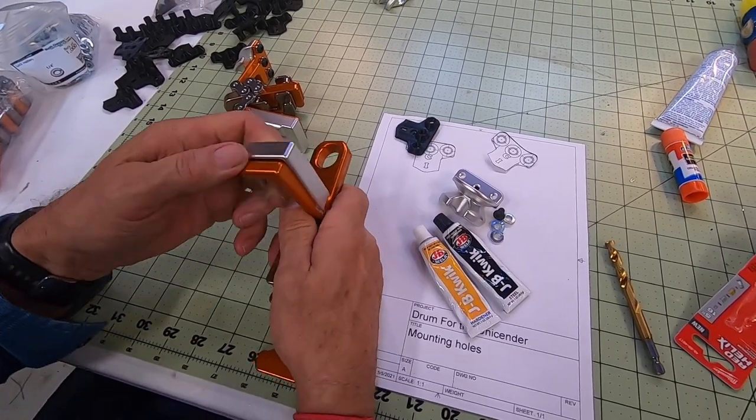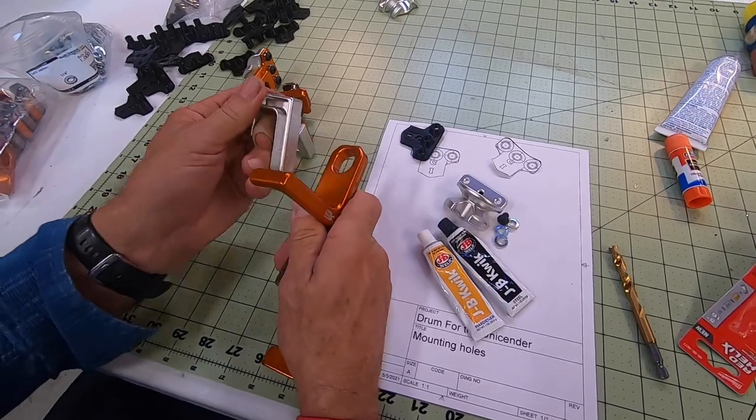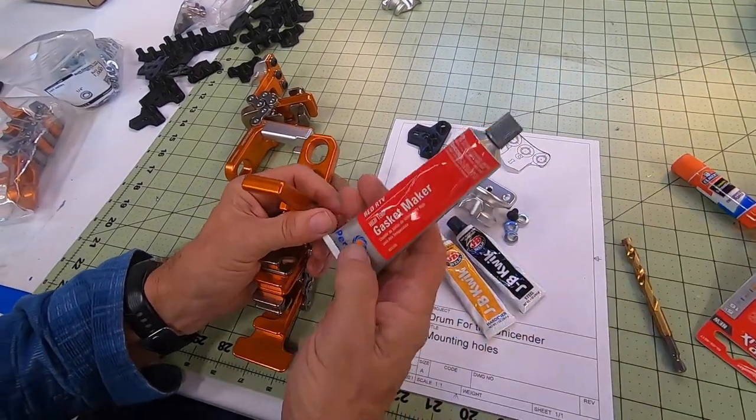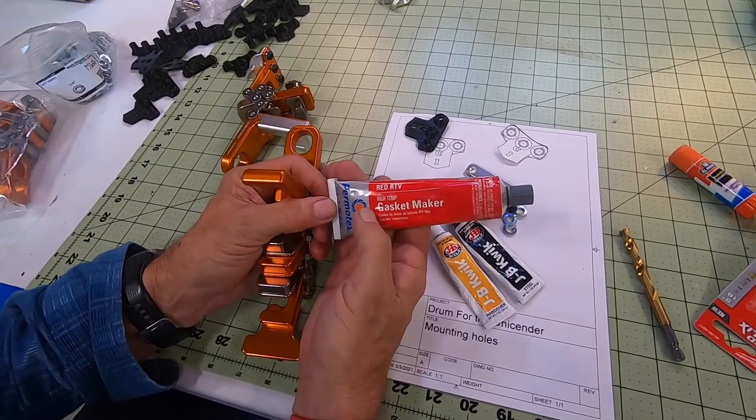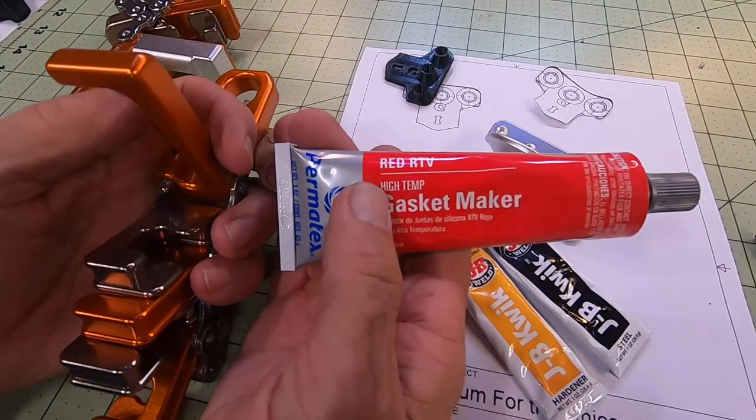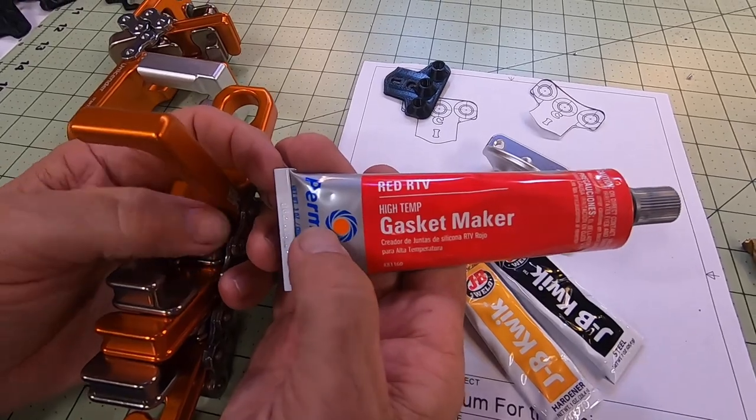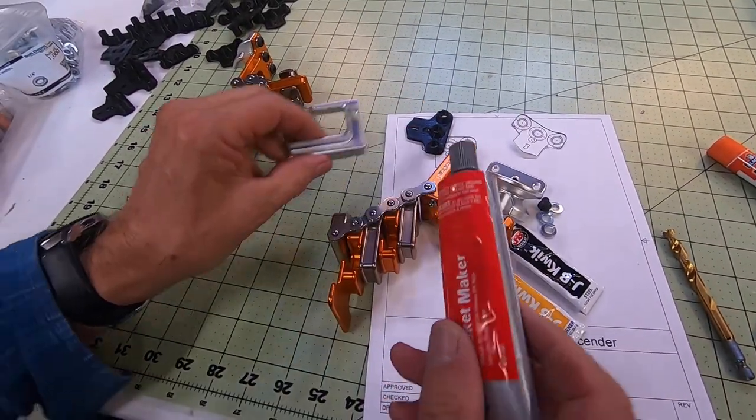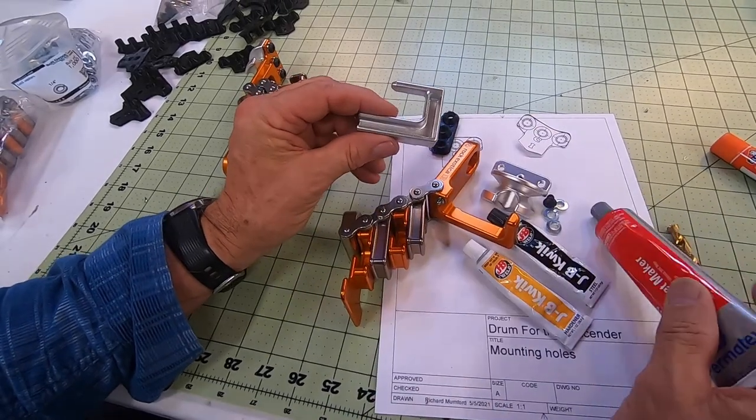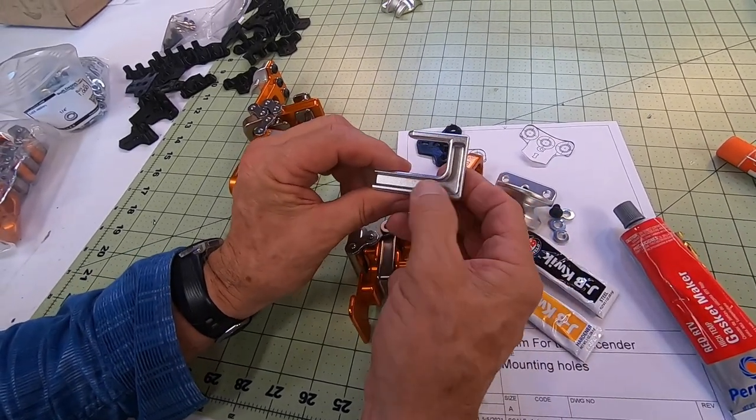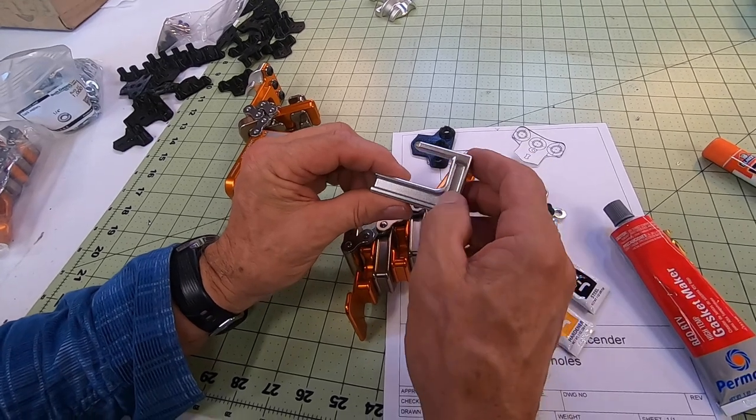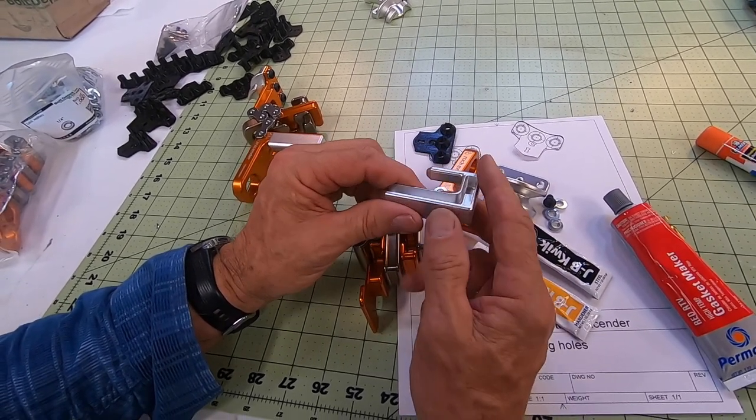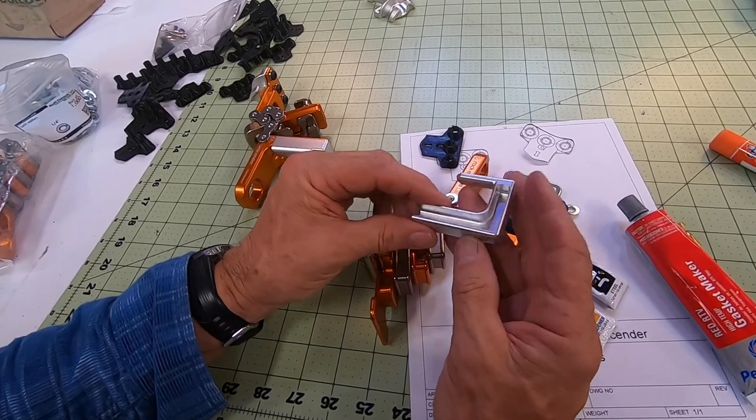You see that it's just a perfect fit. What I've done is I've taken some gasket maker, high temperature silicone because that gets pretty warm on a descent. So take a little bit of that and put it in that channel and then when you put it in the vice and squeeze it down that will spread out and lock that down a little bit.